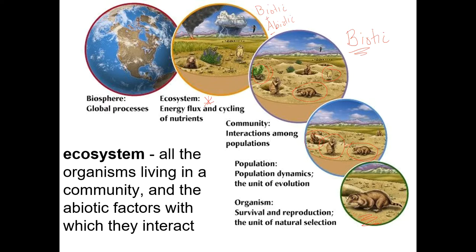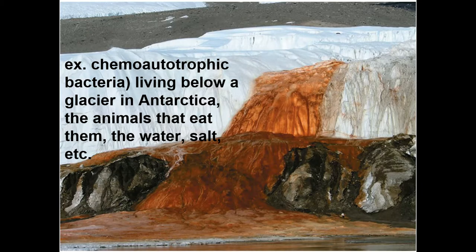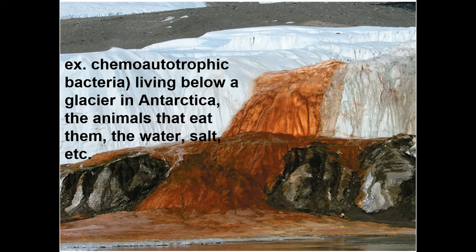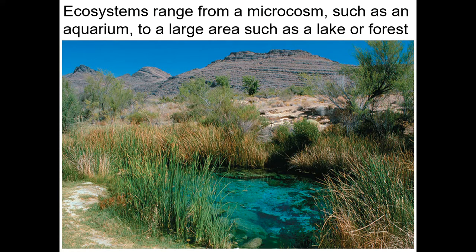Here's an example of an ecosystem: chemoautotrophic bacteria that live below a glacier in Antarctica. They oxidize sulfur for their energy rather than using sunlight, making them chemosynthetic. They use iron as their final electron acceptor, which turns red when it hits the air. Animals eat those bacteria, and all the other living things in that area form the ecosystem. An ecosystem can be tiny like this little pool or huge like a forest or wetland.